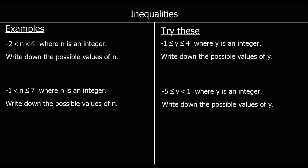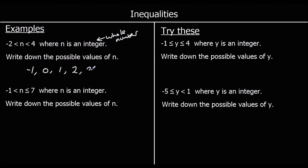A different type of question. We've got n is bigger than negative 2 and less than 4, where n is an integer — that means a whole number. Write down the possible values of n. It can't equal negative 2 and it can't equal 4 because there's no 'or equal to' symbol. So it can be negative 1, 0, 1, 2, and 3.